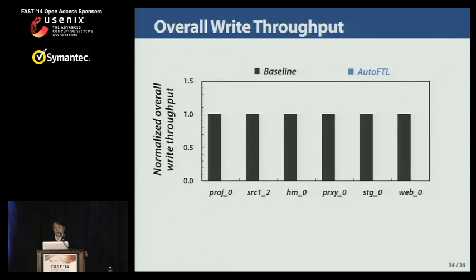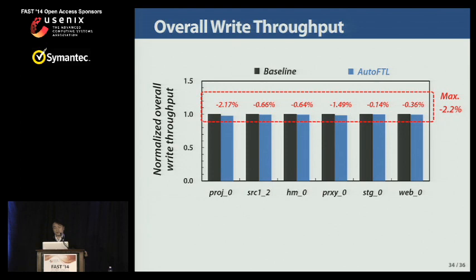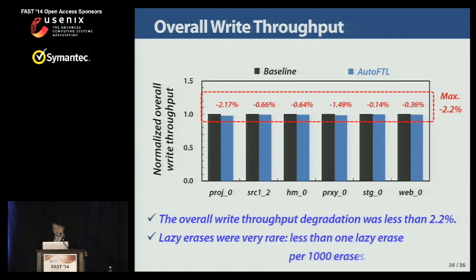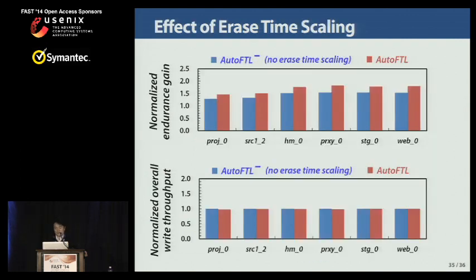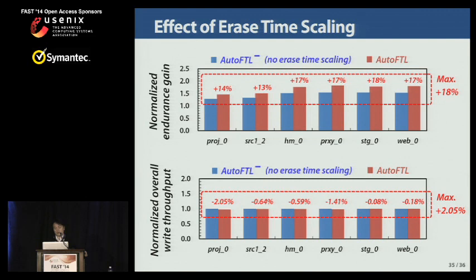Even though ORO-FTL uses slow erase and write modes frequently, the decrease in overall write throughput over baseline was less than 2.2% as expected. This is because ORO-FTL accurately changes the erase and write mode by exploiting idle times. In our evaluations for enterprise traces, re-erases were very rare, less than one re-erase per 1,000 erases. The slow erase mode can improve NAND endurance up to 18%, and it slightly degrades overall write throughput by up to 2.1%. We can conclude that erase time scaling is another useful scheme for improving NAND endurance.